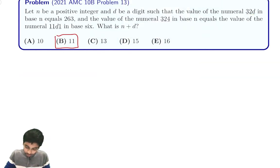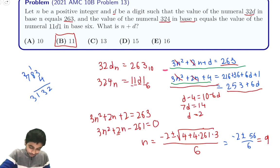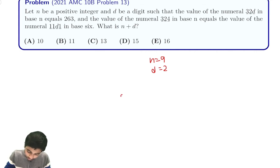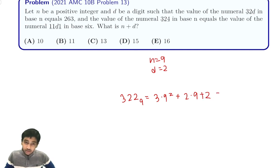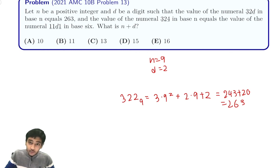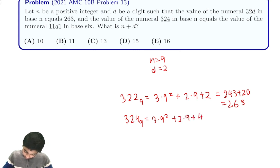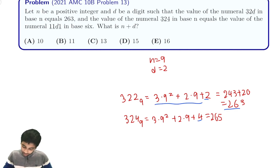The answer was 11. Let's verify. We have n equals 9, d equals 2. So 322 base 9 equals 3 times 81 plus 2 times 9 plus 2, which equals 243 plus 18 plus 2, which is 263. That works. Now for 324 base 9: since we already found the first expression to be 263, we just add 2 (the difference between 4 and 2), giving us 265.